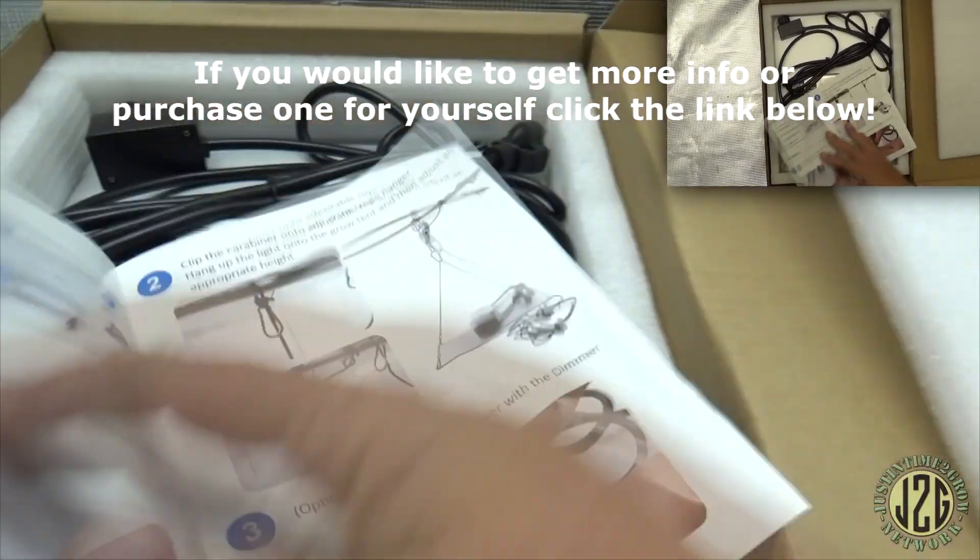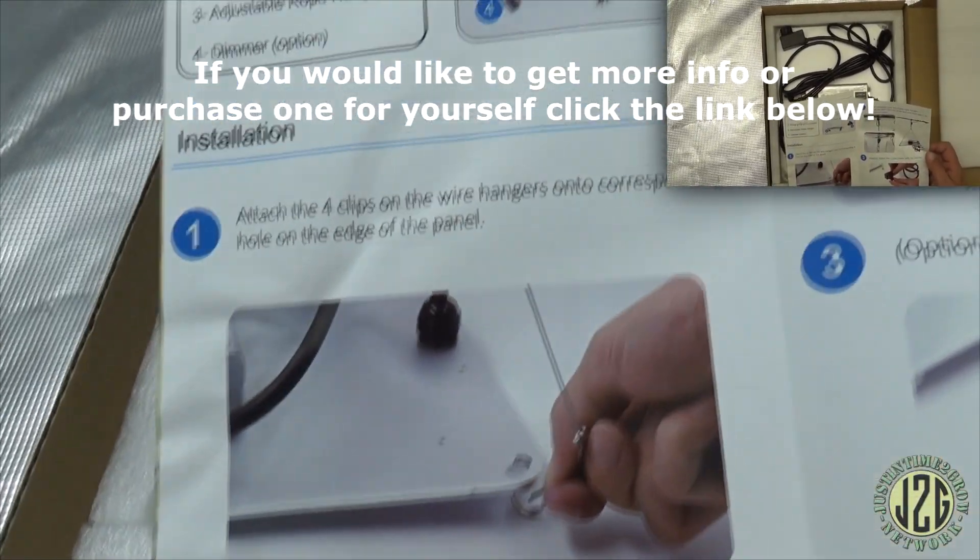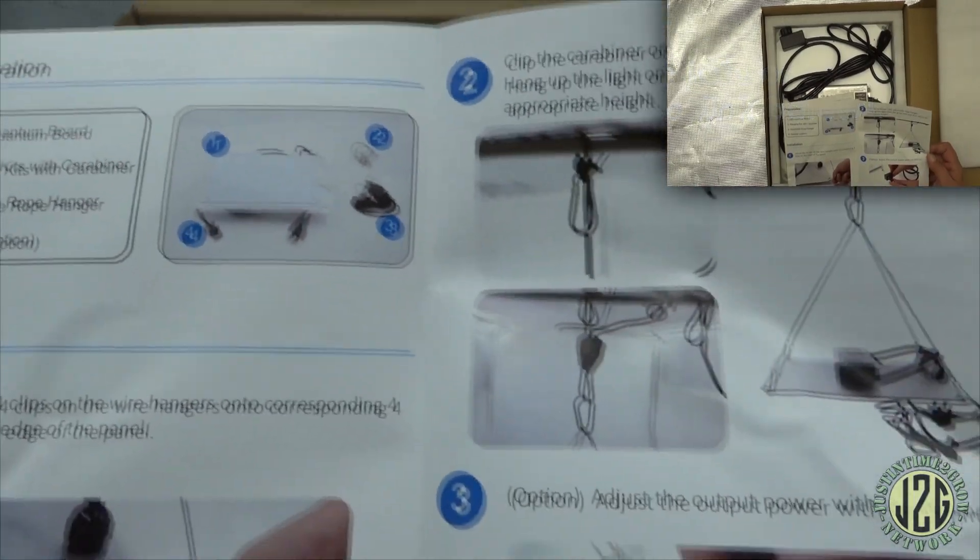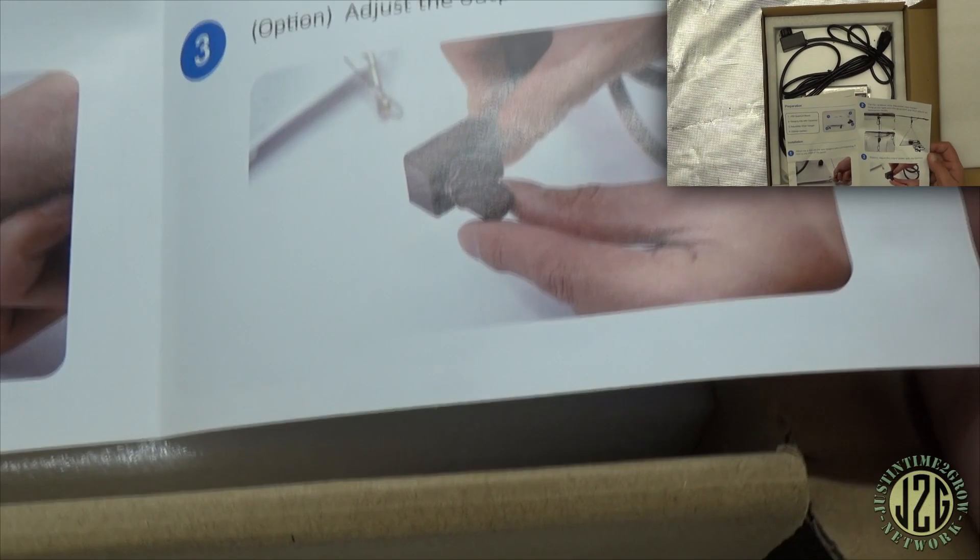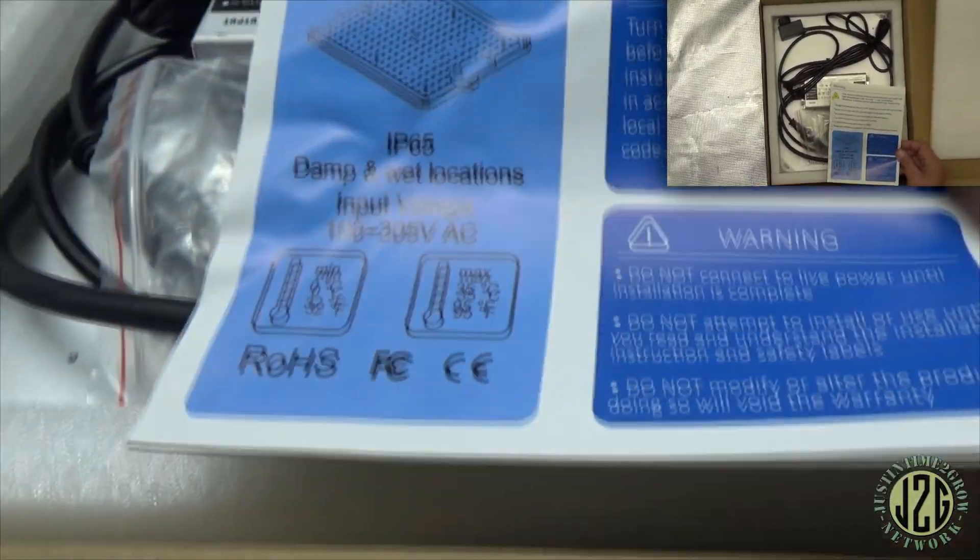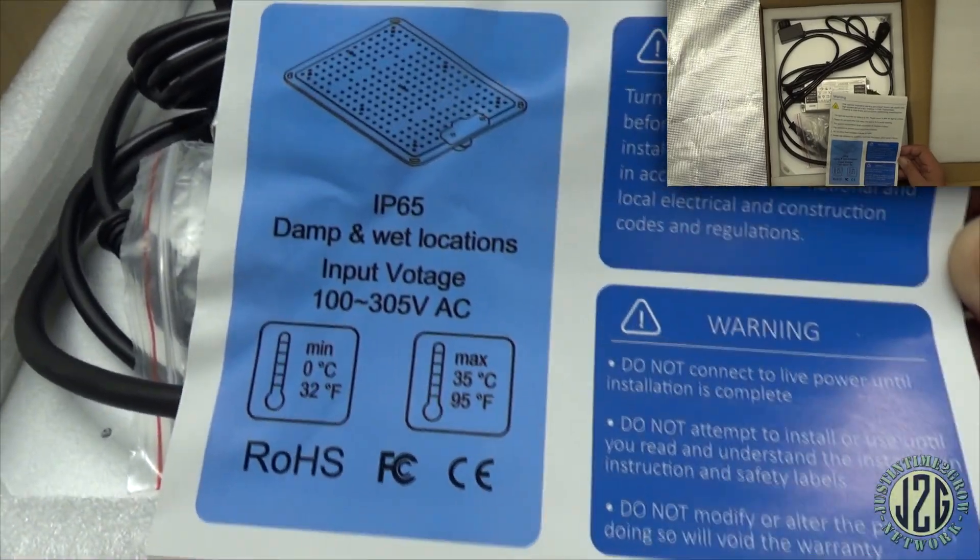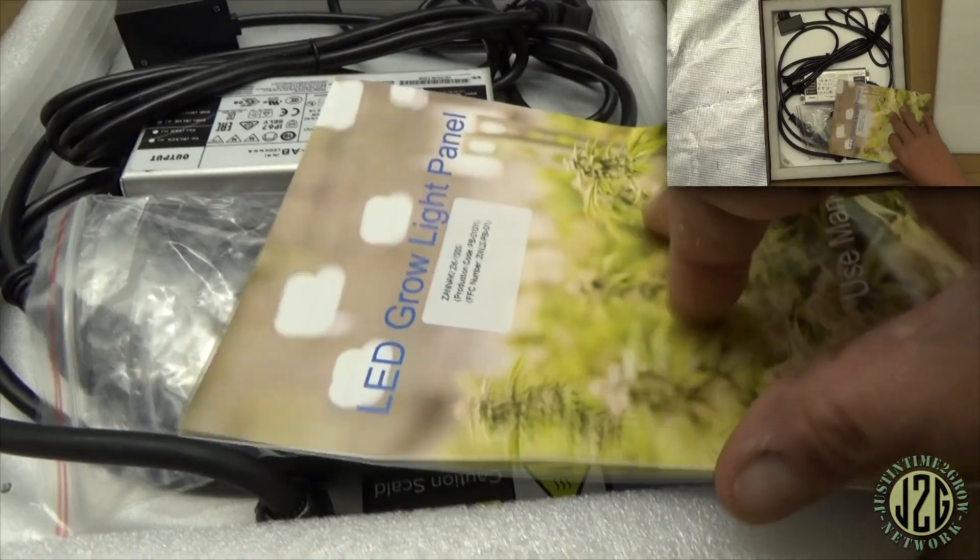Let's see what the manual looks like. Take a look inside, they show you how to hook it up, what it comes with, the hang kit, all that good stuff. Does have a dimmer, oh yeah, gotta love the dimmer. Input voltage warning thing on the back side here.